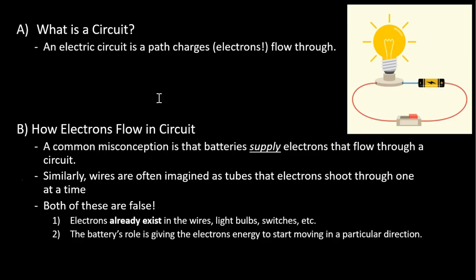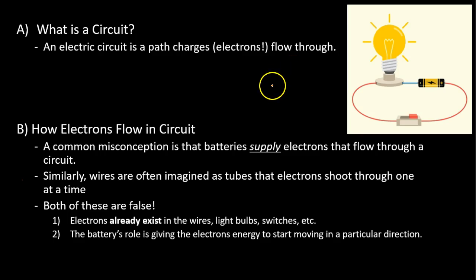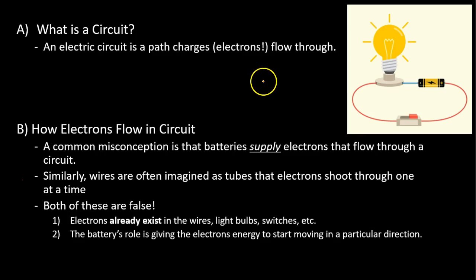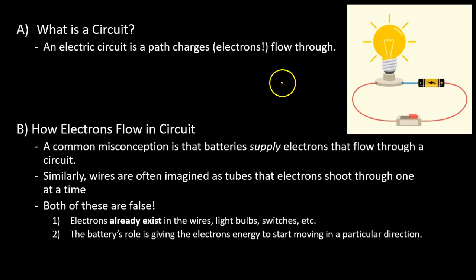What is a circuit if you want a definition? It's a path that charges — electrons — flow through. When we're talking about moving charges, it's always the electrons that are moving. Those protons are locked in place. We've seen charges moving when you bring positive or negatively charged objects nearby. If we want those charges to move in a certain way, we create a path — we create an electric circuit.